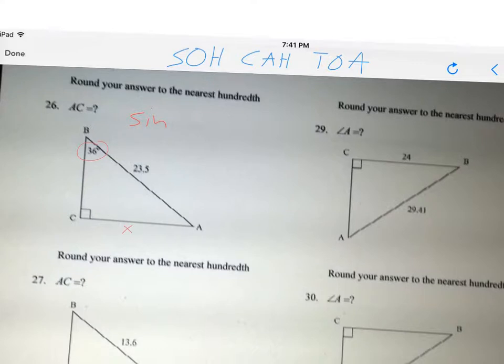With my trig function every time, I put in the angle, this angle is 36 degrees, and then sine is the opposite over the hypotenuse. So the opposite here is X, the hypotenuse is 23.5.